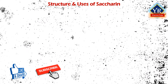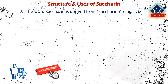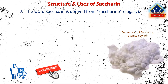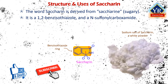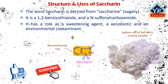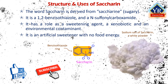Structure and uses of saccharine. Saccharine derives its name from the word saccharine meaning sugary, and it is used as an artificial sweetening agent. Saccharine is structurally a 1,2-benz-isothiazol having a keto group at the third position and two oxo substituents at the first position. Thus, it is a 1,2-benz-isothiazol N-sulfonyl carboxamide. It has a role as a sweetening agent, a xenobiotic and an environmental contaminant. Saccharine is an artificial sweetener with effectively no food energy.